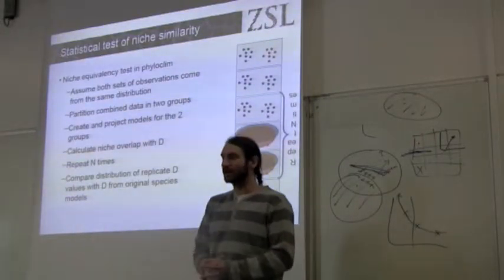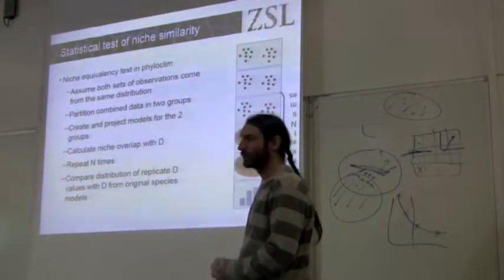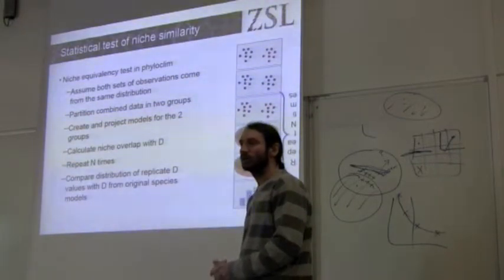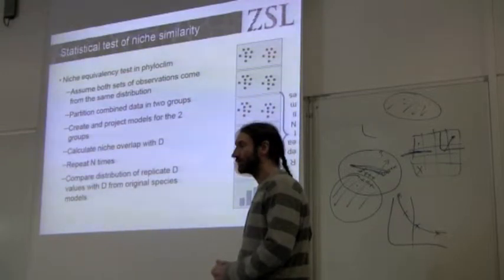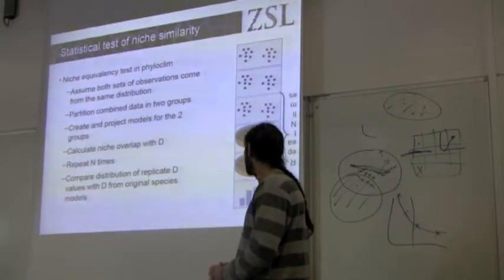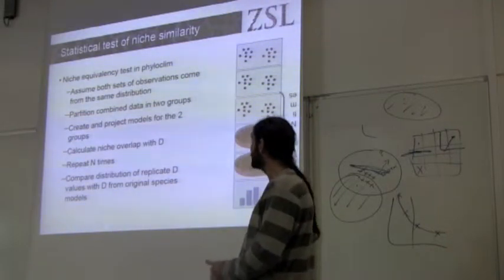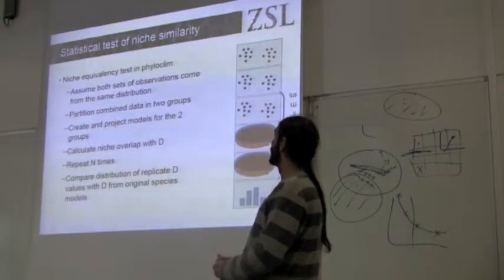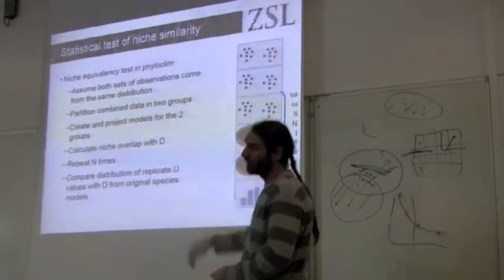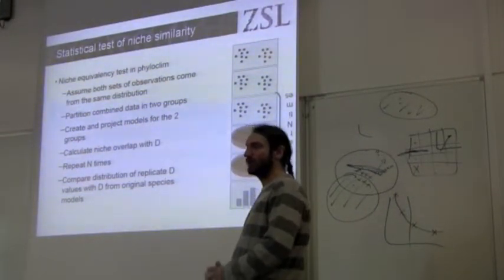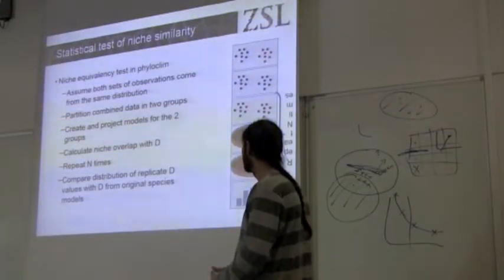You can't directly, but there's a randomization procedure that we can use to address that question and give us a statistic to say whether there's a significant level of any similarity or difference. And this is called the Leach equivalency test. It's in Filoclone, but it's also in BISMO, and you can find it in other software packages as well.